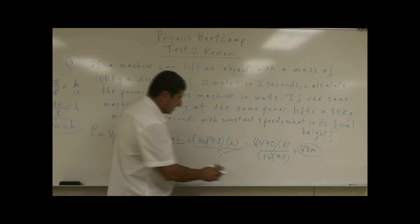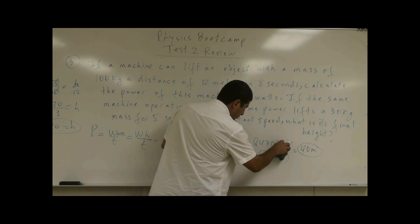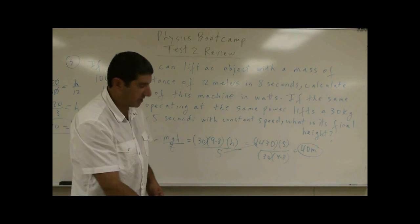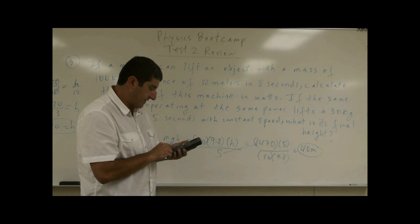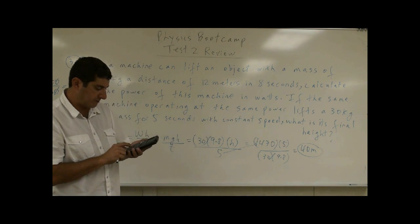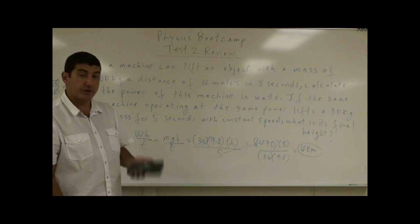And then you would put 30, 9.8, and then 1470, and you would get what? You would get 5 over here. Now what would the answer be? Now it would be 5 times 1470 divided by 30 divided by 9.8. You get 25.